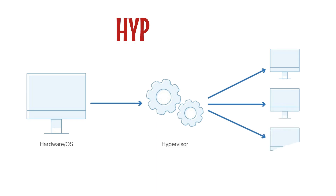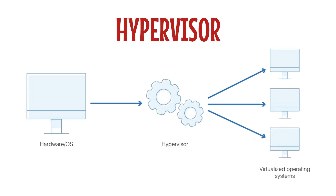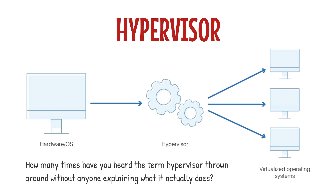Have you ever heard of the hypervisor? It's the layer that makes virtualization possible. When your application tries to run a privileged instruction — like accessing hardware directly — the hypervisor steps in and says, 'Hold on, that's not allowed.' Binary translation rewrites that instruction on the fly, translating it into something the virtualized system can execute safely. How many times have you heard the term hypervisor thrown around without anyone explaining what it actually does? If this is the first time it's clicked for you, hit that like button.